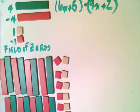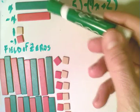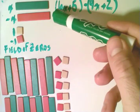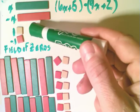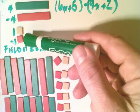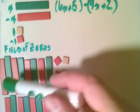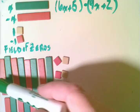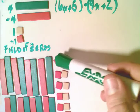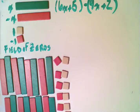We have the green tiles are positive x, the red tiles, red long ones are negative x, tan is a positive 1, and the red square is negative 1. We also have our field of zeros here, so we have zero pairs of x and minus x, and zero pairs of 1 and minus 1, which we'll be using in the subtraction process.